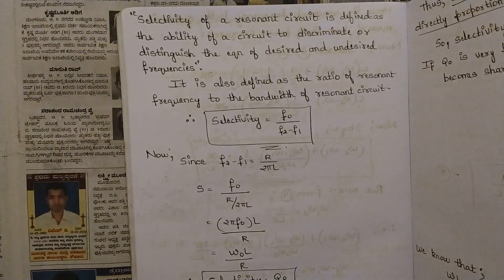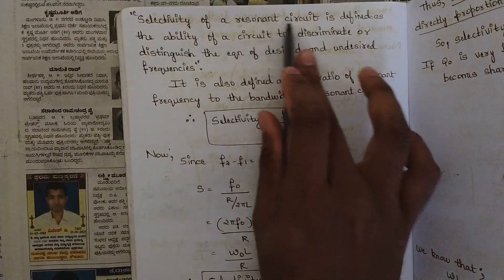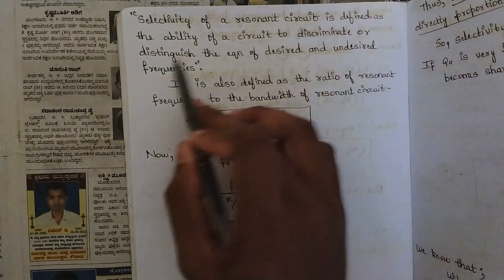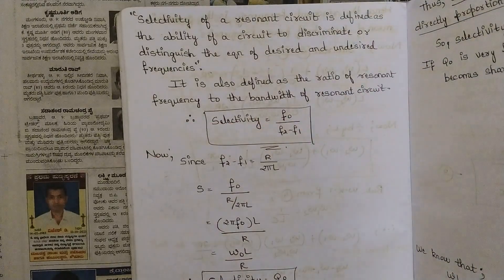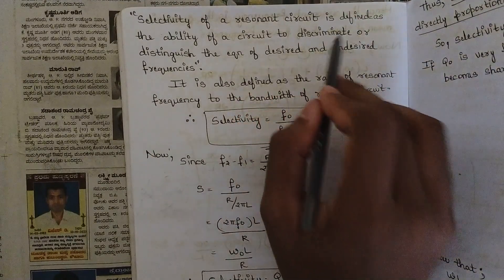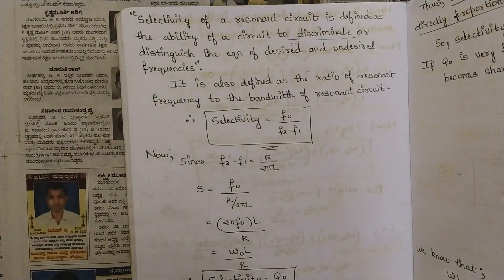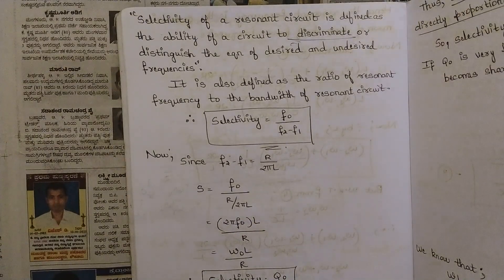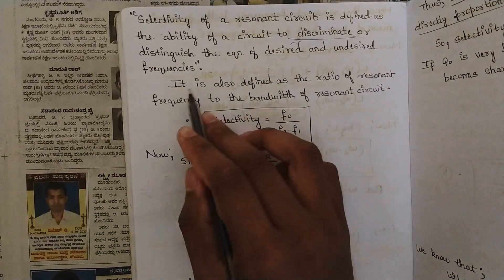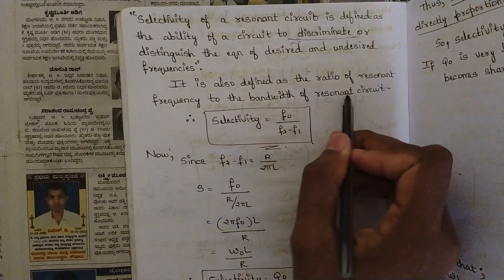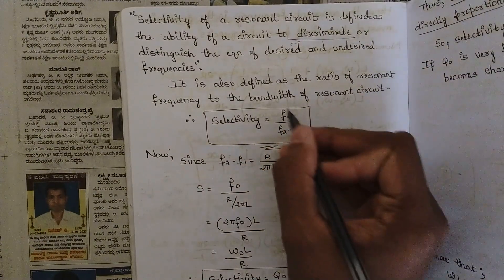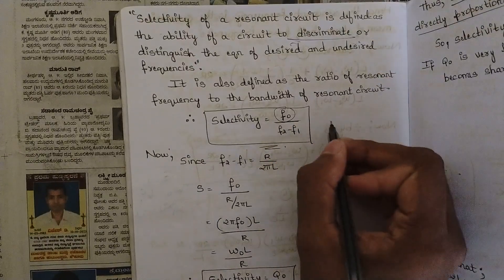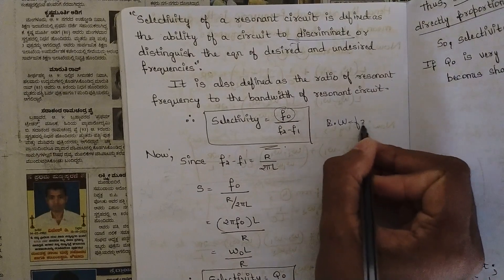So what is selectivity? Selectivity for a resonant circuit is defined as the ability of the circuit to discriminate or distinguish between desired and undesired frequencies. It eliminates the unwanted frequencies and keeps the wanted frequencies. It is also defined as the ratio of resonant frequency to the bandwidth — that is, selectivity equals f0 divided by (f2 minus f1). We know that the expression of bandwidth is f2 minus f1.